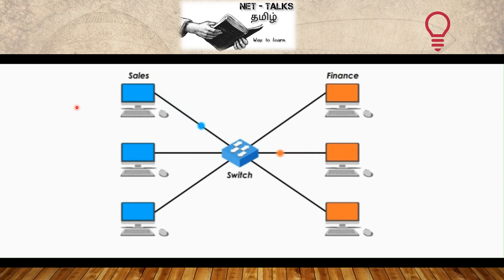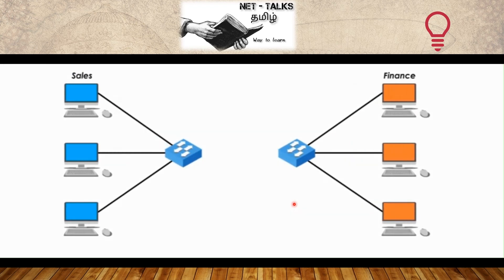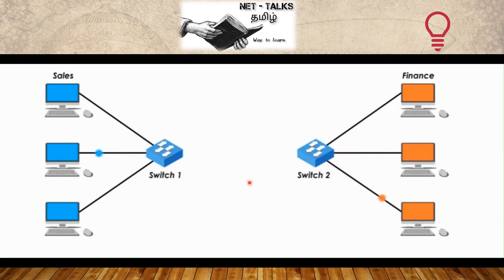Consider a scenario with two departments: Sales and Finance, connected to one switch forming a single broadcast domain. Problems with this setup include poor performance due to excessive broadcast traffic, and security concerns since Sales and Finance can communicate freely. To solve this, we need to segregate them.